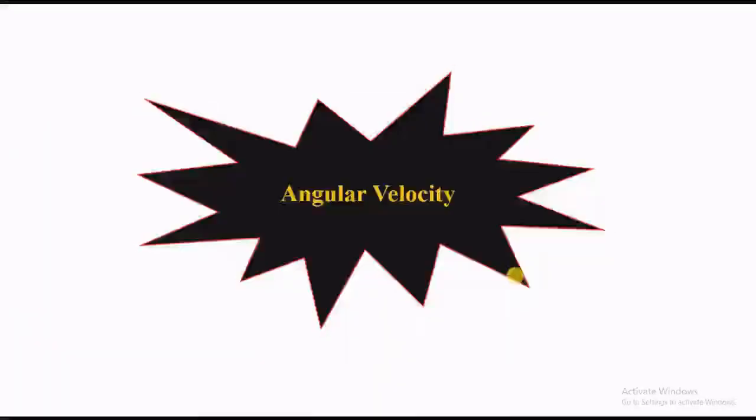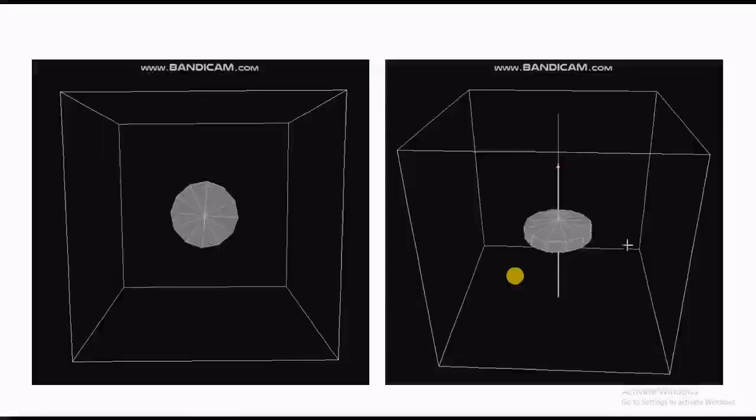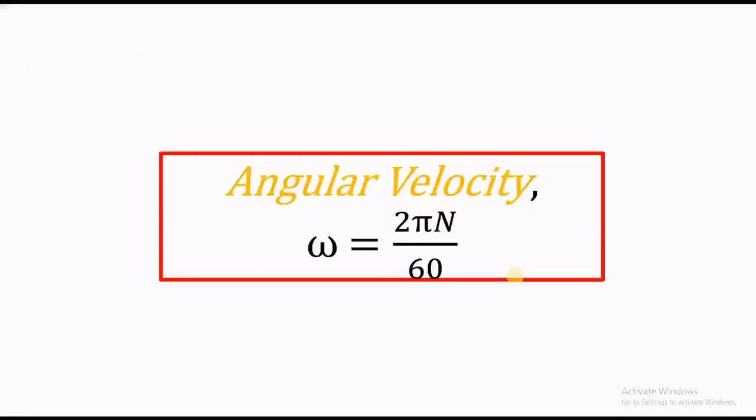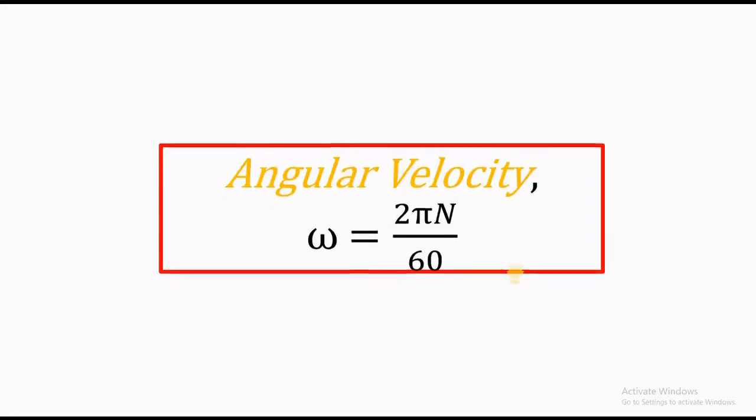The key term of our discussion is angular velocity. As an object moving in a straight line is associated with a linear velocity, an object executing a circular motion is associated with an angular velocity omega which is specified in radians per second. Mathematically, omega equals 2πn by 60 where n is the number of revolutions per minute.